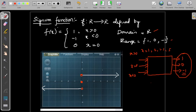Domain is R, range is the set containing 1, 0, minus 1, and the graph of the function goes like this.